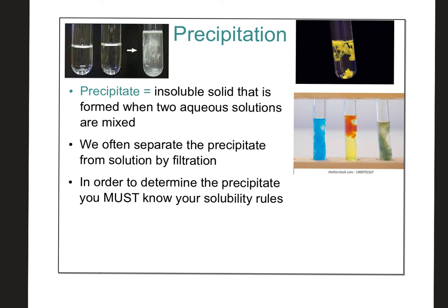A precipitate forms when there's an insoluble solid created when two aqueous solutions are mixed. When two clear chemicals are mixed and cloudiness appears, that solid is the precipitate — insoluble because it is not dissolving in the liquid. In lab, we separate the precipitate using a filtering system with a funnel and filter paper, where the solid collects on top and the liquid drips down. To determine whether a precipitate forms, you need to know the solubility rules.